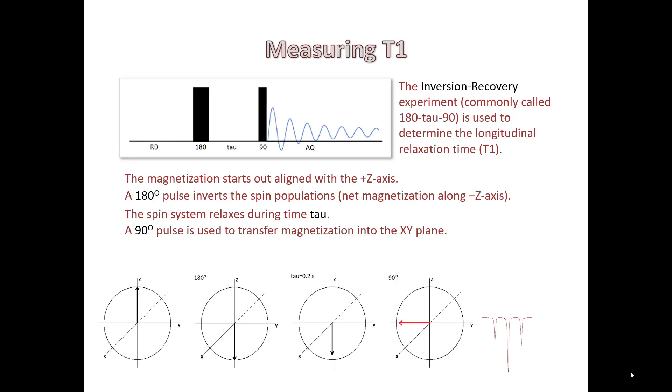We'll run the same experiment again. We wait a time so that the magnetization is along positive z, invert it with a 180 degree pulse. This time we wait a little bit longer and we notice the magnetization vector has shrunk to be a little bit smaller. When we pulse this into the xy plane, we get a little bit smaller peak than we previously did.